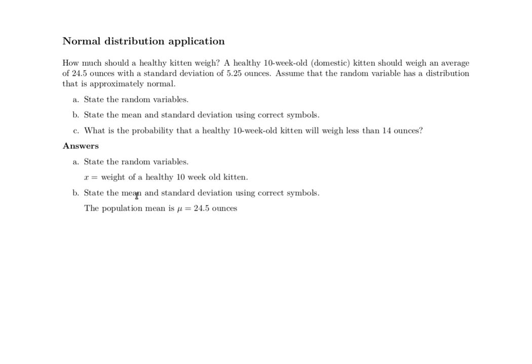We want to state the mean and standard deviation using correct symbols. The population mean mu equals 24.5 ounces, and the population standard deviation sigma equals 5.25 ounces. Both of those pieces of information were simply given in the problem.